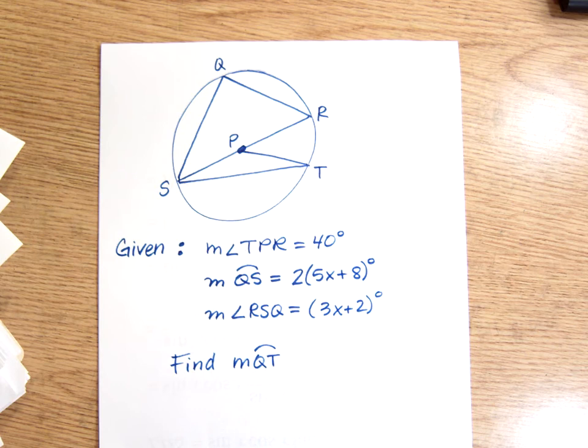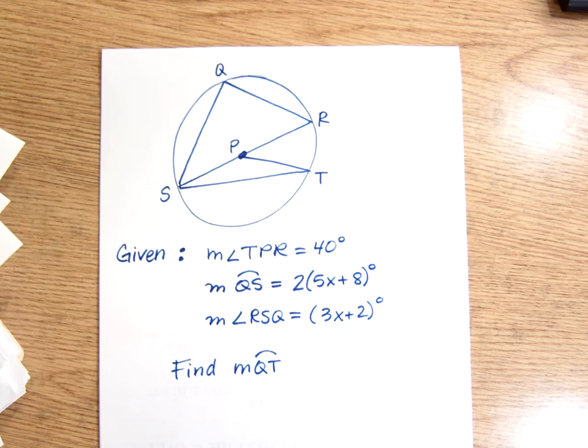Okay, so first thing I'm going to notice is one of the things that's given to me is an angle measure, so I'm going to mark that on there. And then I'm going to look at what else I'm given, and I might as well put it on there. Let's see if I can.